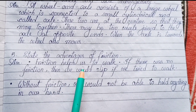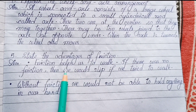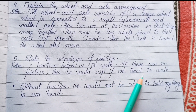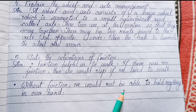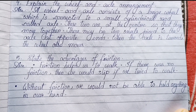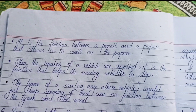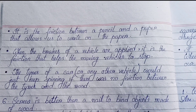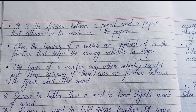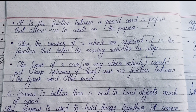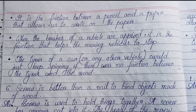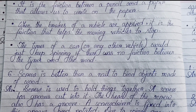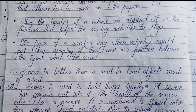Number five: State the advantages of friction. Friction helps us to walk — if there was no friction we would slip. Without friction, we would not be able to hold anything in our hands. It is friction between a pencil and paper that allows us to write. When brakes of a vehicle are applied, friction helps the moving vehicle to stop. Without friction between the tires and the road, the tires would just keep spinning.